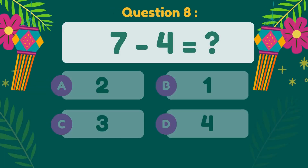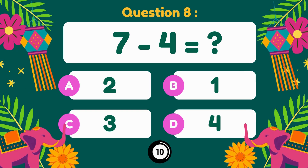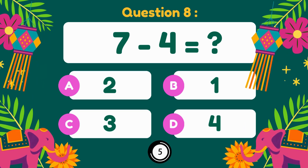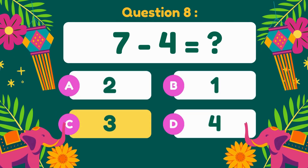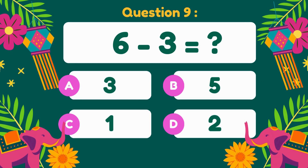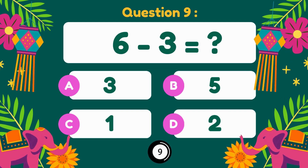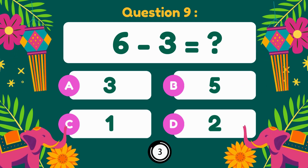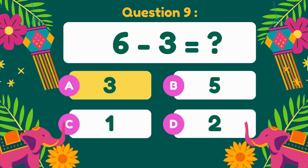7 minus 4. 7 minus 4 equals 3. 6 minus 3. 6 minus 3 equals 3.